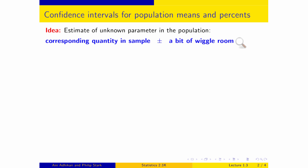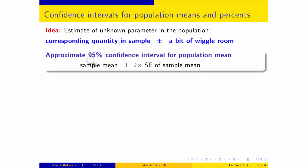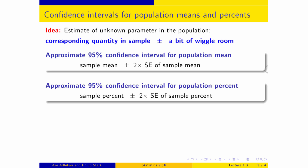Formally, if you are trying to estimate a population mean, then you will start with the sample mean and go a few standard errors for the sample mean on either side. If you want an approximate 95% confidence interval for your unknown population mean, then you will start at the sample mean and go two standard errors on either side. You can write exactly the same statement for population percents: a 95% confidence interval starts with the sample percent in the center and goes two standard errors of the sample percent on either side.